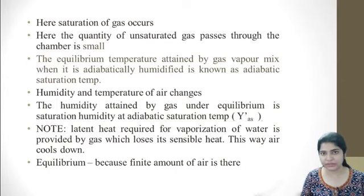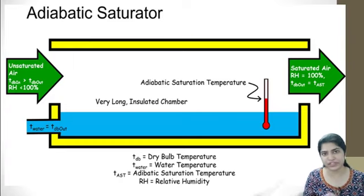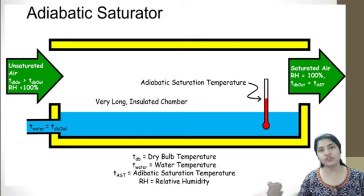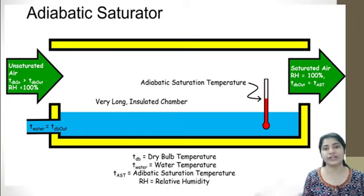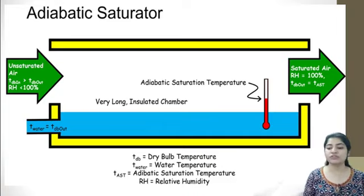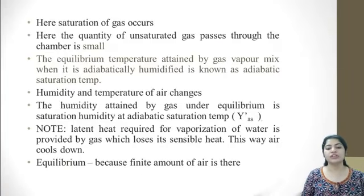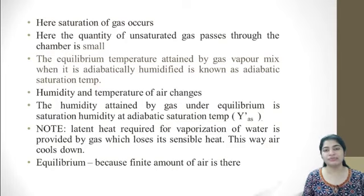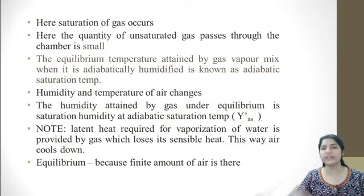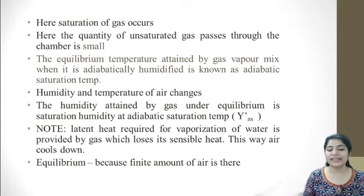Note the key point: it is an equilibrium temperature. The humidity attained by the gas under equilibrium is saturation humidity at the adiabatic saturation temperature, denoted Y'_as — where the dash indicates the saturated condition, meaning no more water can be transferred into the air. The latent heat required for vaporization of water is provided by the gas, which loses its sensible heat. Hence, the air cools down as water transfers from liquid phase to vapor phase.